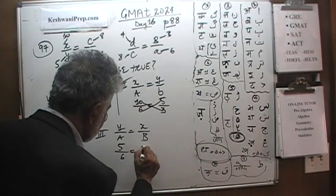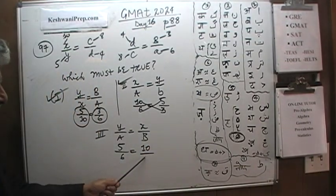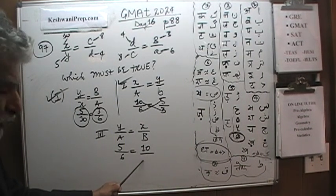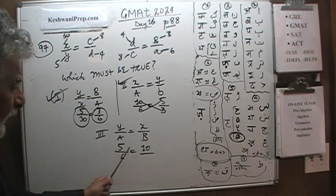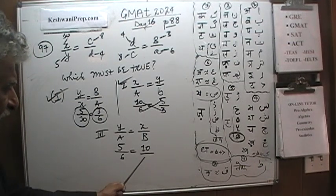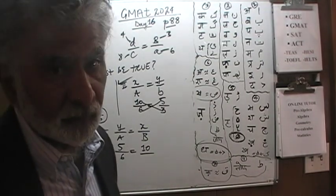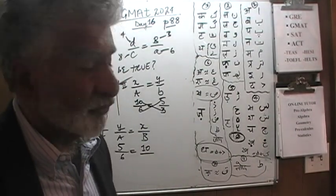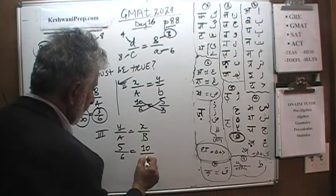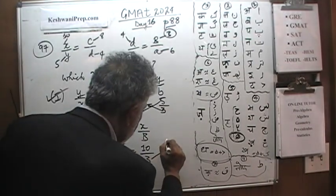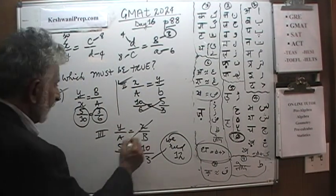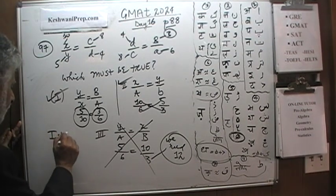Testing statement 3: y over a is 5 over 6, and x over b is 10 over 3. For this to be true, since the numerator doubles from 5 to 10, the denominator would also need to double — from 6 to 12. But b is 3, not 12. So statement 3 does not work. The answer is statements 1 and 2 only.